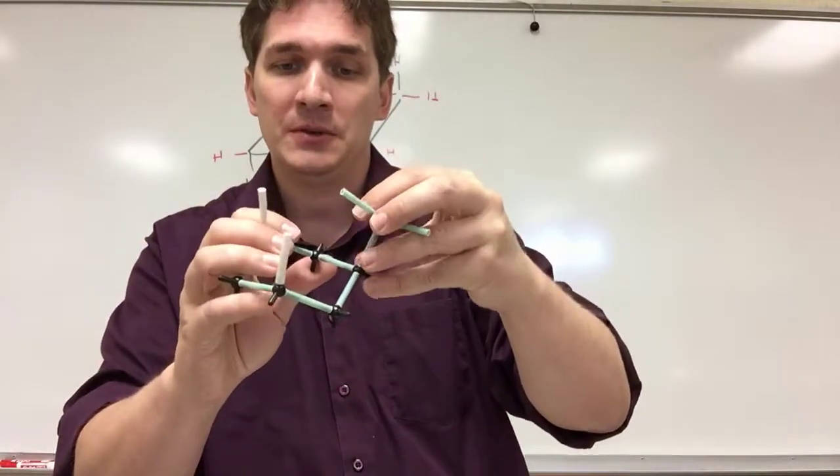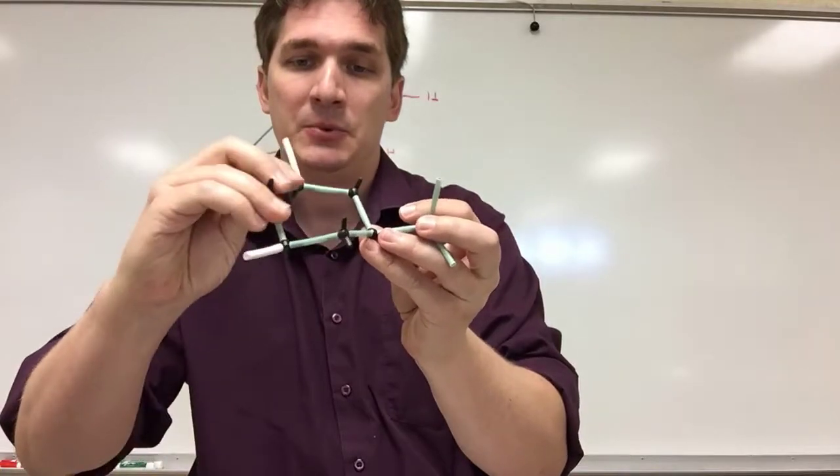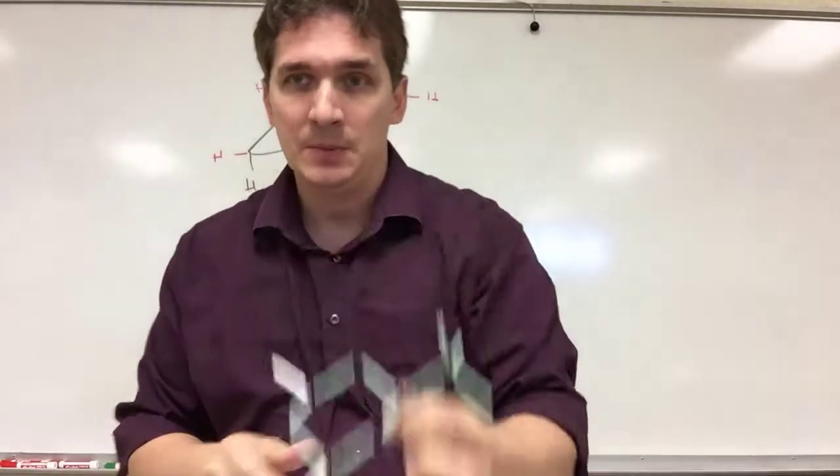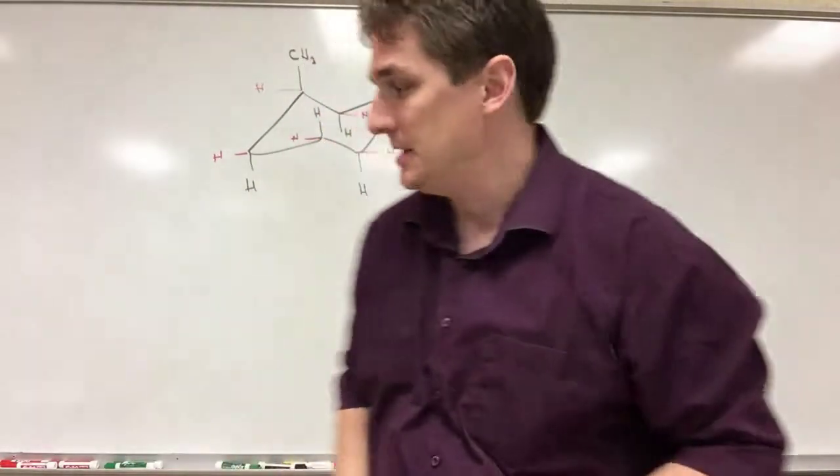Well, we can go through our different transition states, and we can flip the ring. And in flipping the ring, we're gonna take our CH3 group, and we're gonna make it an equatorial bond instead of an axial bond.